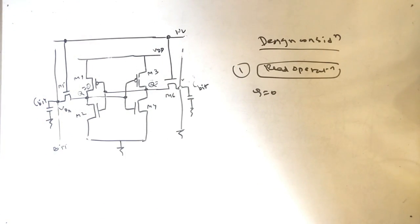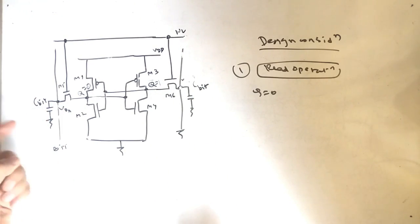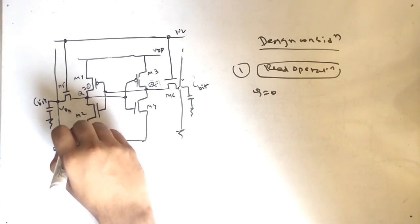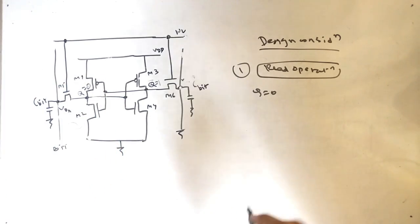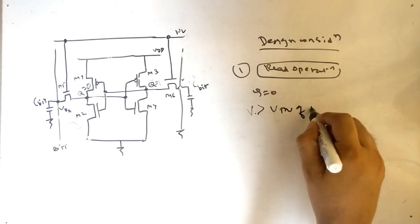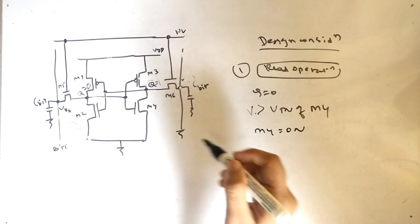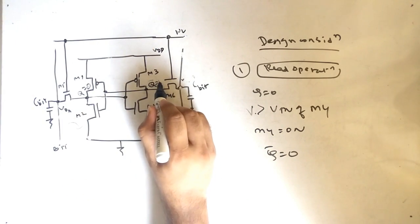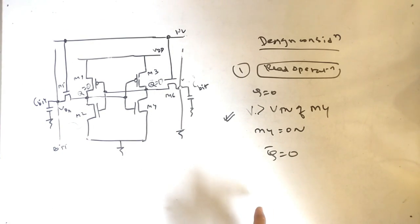The third point is design consideration, which arises during the read operation. Let's say Q is 0 and Q-bar is 1. When we precharge, there is a voltage difference between VDD and 0, so the capacitor discharges — that's fine. But the problem is that the voltage here is also increasing. If voltage increases beyond the threshold voltage of M4, then M4 would turn on, making Q-bar go to 0. So at the same time, both Q and Q-bar would be 0, which is the problem.